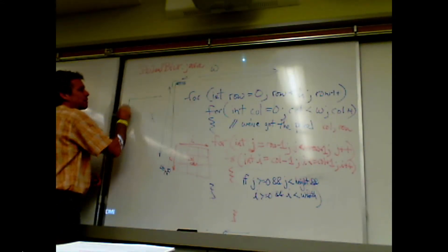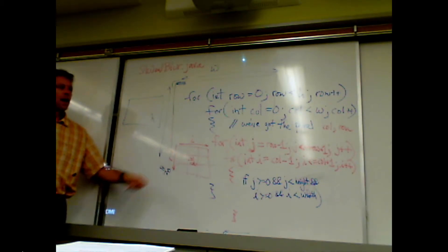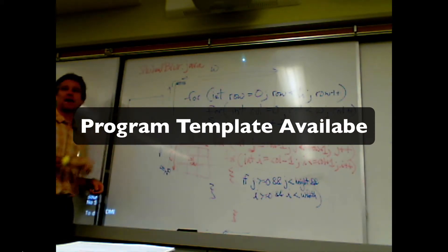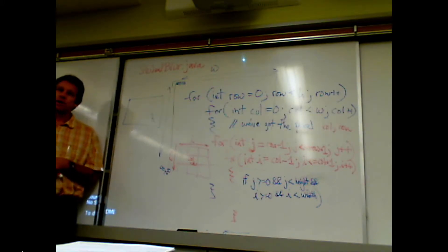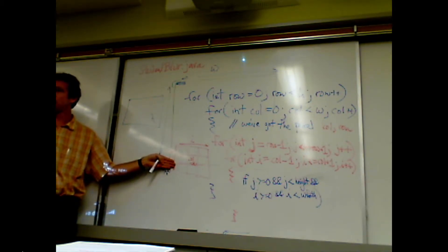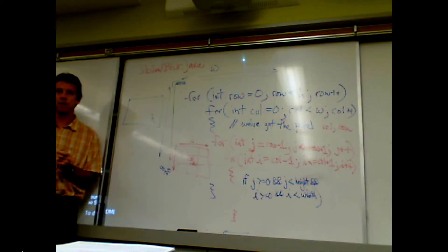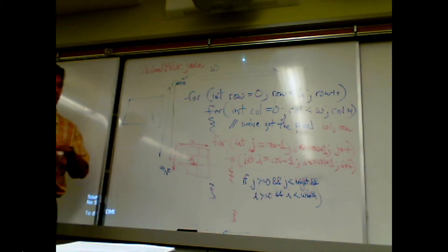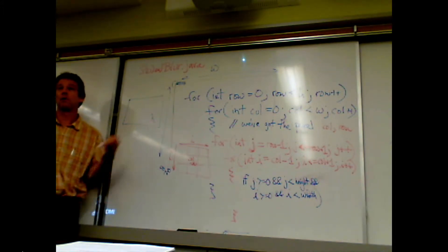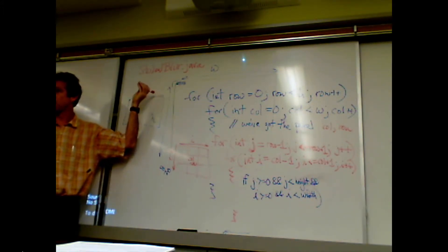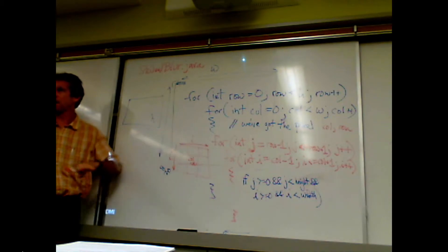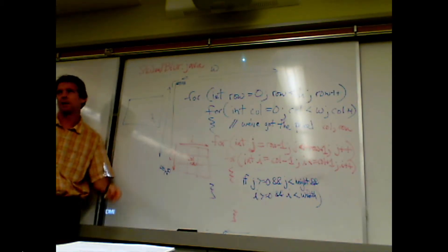Almost immediately after students are released to begin working, a template is offered to students who want some structure. The teacher explains: you can look in the picture class, which you already have a copy of, to figure out how to create a blank picture. If you want a little more structure, go online to the public folder and download studentblur.java from the server. It has some pieces already but is missing a whole bunch of stuff you'll have to fill in — it may give you a jump start to avoid digging through the API.